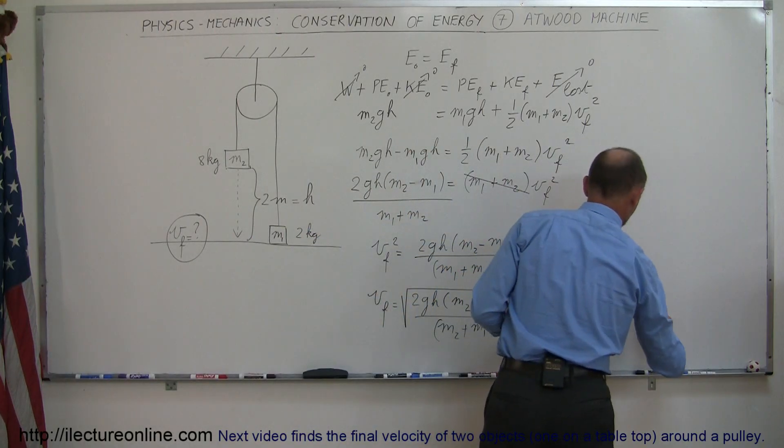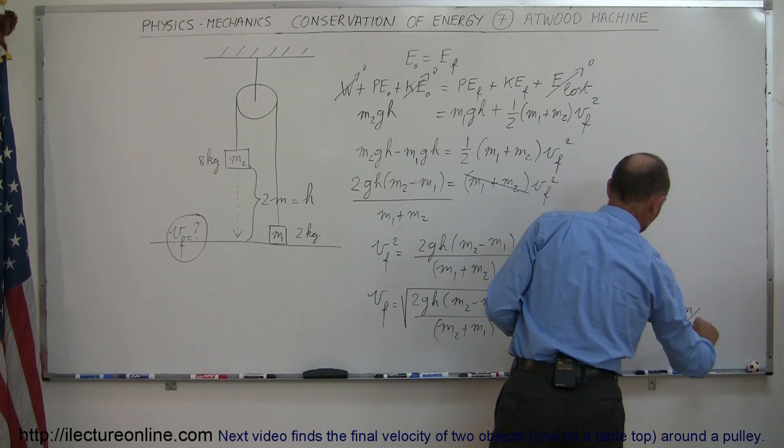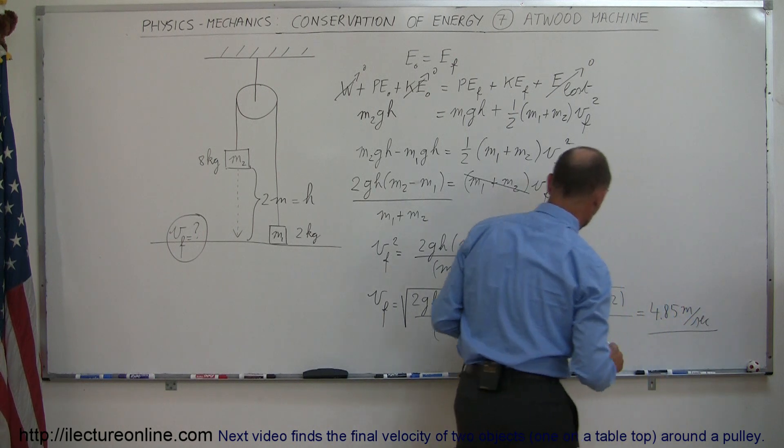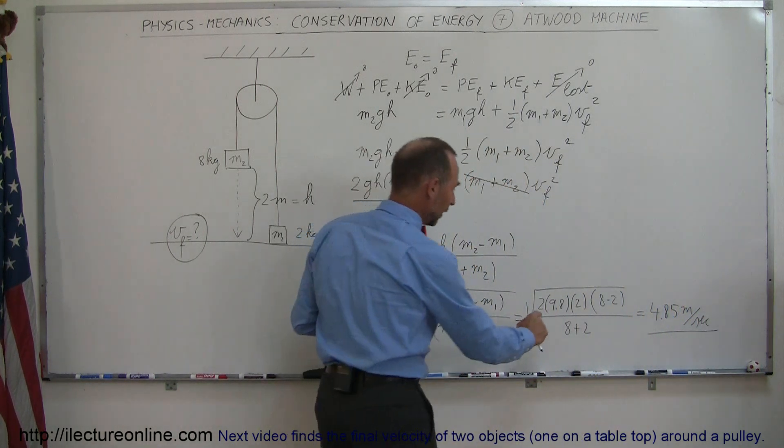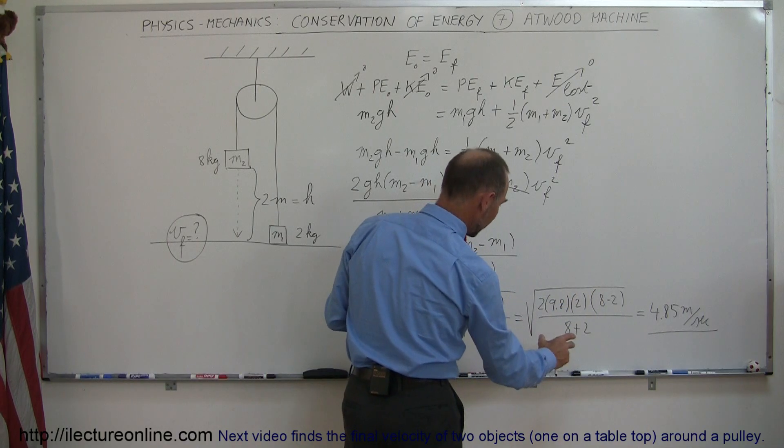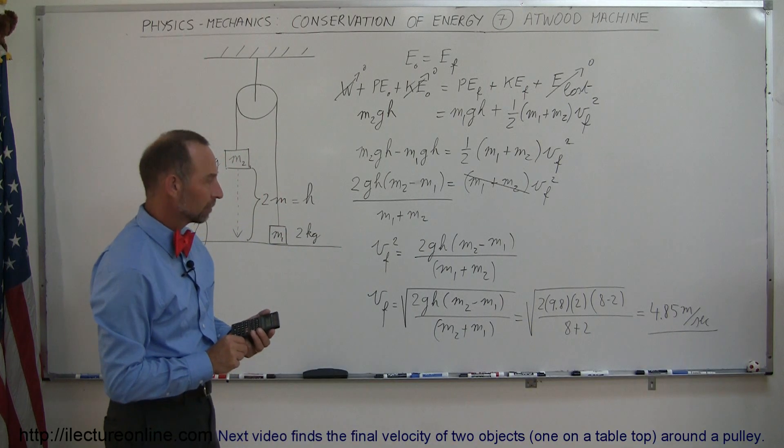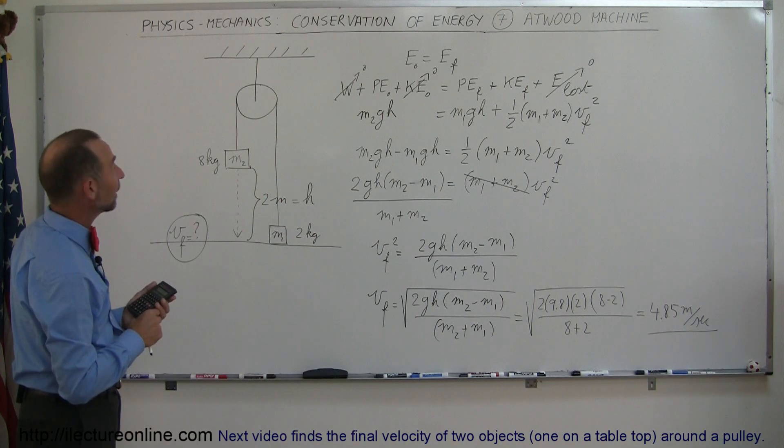So finally we can say the final velocity is 4.85 meters per second when it reaches the ground. Let me check real quick again. So it would be about 36, so it would be 103.6. Yep, that sounds about right, roughly speaking.